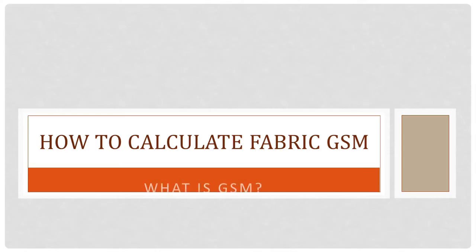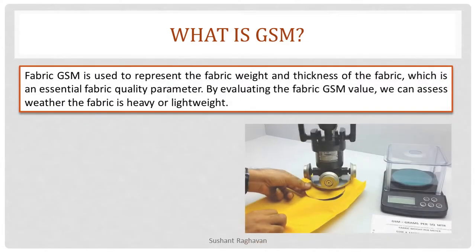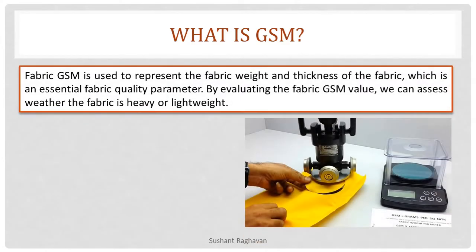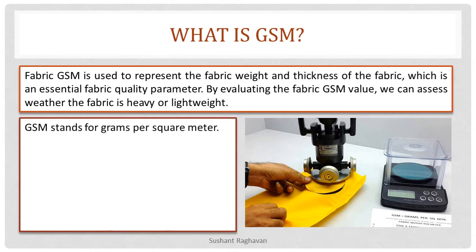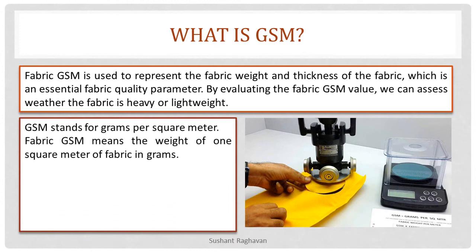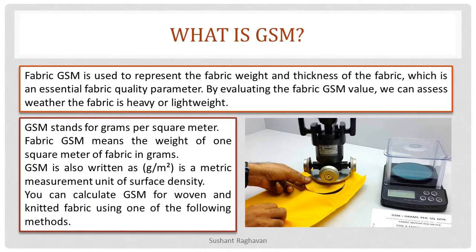How to calculate fabric GSM? What is GSM? Fabric GSM is used to represent the fabric weight and thickness of the fabric, which is an essential fabric quality parameter. By evaluating the fabric GSM value, we can assess whether the fabric is heavy or lightweight. GSM stands for grams per square meter. Fabric GSM means the weight of one square meter of fabric in grams. GSM is also written as G/m² and is a metric measurement unit of surface density. You can calculate the GSM of woven and knitted fabric using one of the following methods.